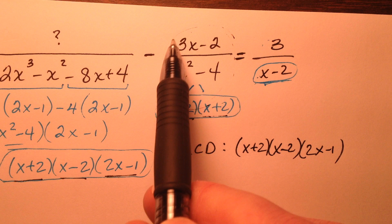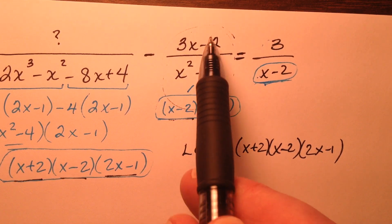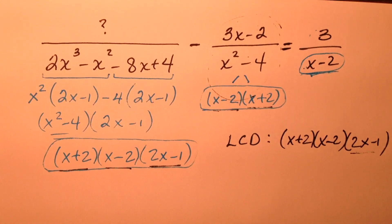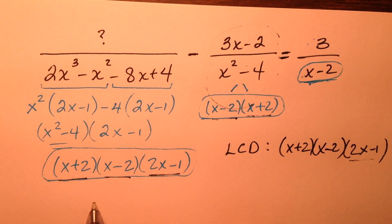So we'll have to run through and multiply the top and bottom by the missing factor, 2x minus 1. So let's go ahead and do that. And I'm going to leave this as a question mark for now, because I'm just not sure what that is.